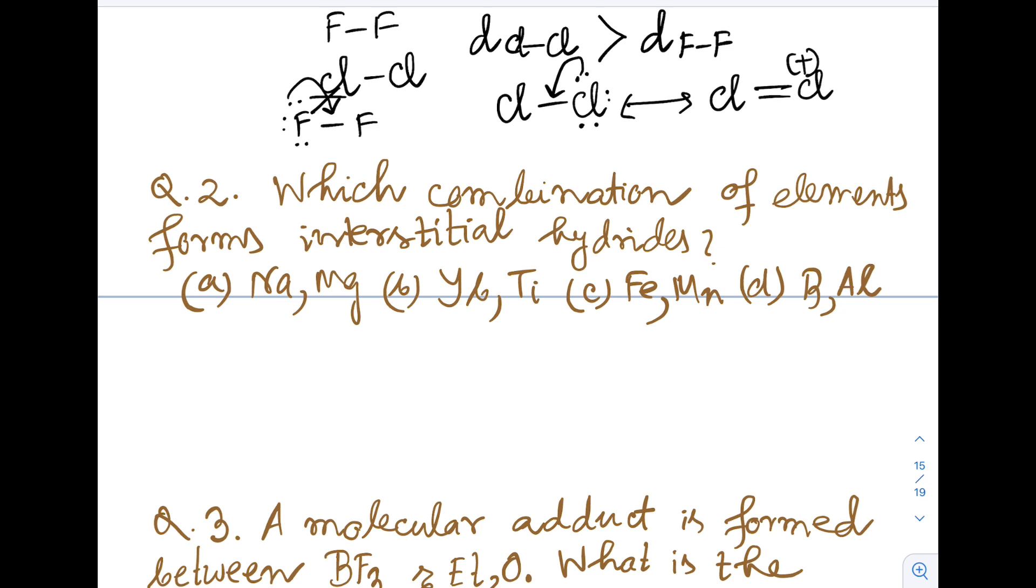Next, question 2. Which combination of elements forms interstitial hydrides? This is a common informative question. If you go through the chapter on hydrogen and d-block elements properly, you can find this information in the NCERT book written in a defined manner.